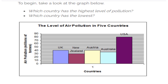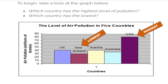Now look at this graph. Which country has the highest level of pollution, and which country has the lowest level of pollution? If your answer is USA for question one and New Zealand for question two, it's correct. We are comparing which one is high, which one is low, same or different — that is what we do in a static chart. The highest level of pollution is in the USA and the lowest level of pollution is in New Zealand.